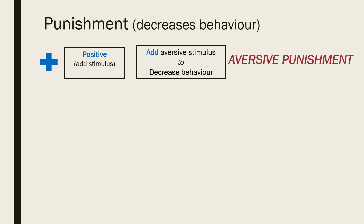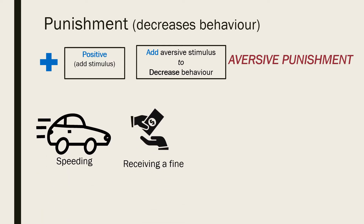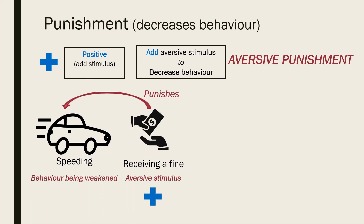It is something the learner will wish to avoid in the future. For example, if you are caught speeding and are issued a fine. In this case, we want to weaken the speeding behaviour so that it occurs less often. The punisher being used to achieve this is the addition of an aversive stimulus in the form of the fine. If this punishment is applied to the learner in a timely and consistent manner, it should be successful at weakening this speeding behaviour, and in future you obey the speed limit.